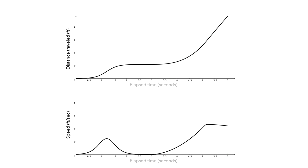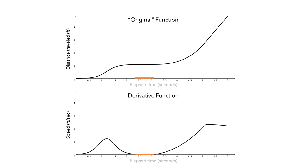Now that we've completed making the graph, let's look back and find a few key features that relate the graph of the original function with the graph of the derivative function. First, there was a section of the distance function where, as time increased, the distance did not increase or decrease. Thus, for these time values, the value of the derivative function was 0. So we can summarize this as: if the value of the function stays constant as time increases, then the value of the derivative is 0 for the corresponding times.